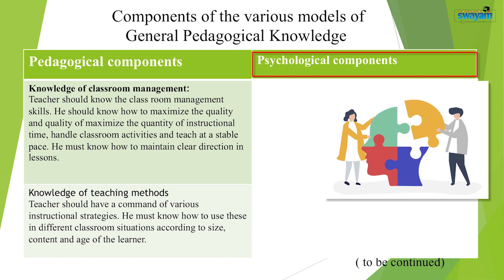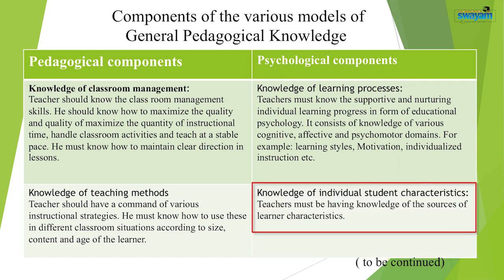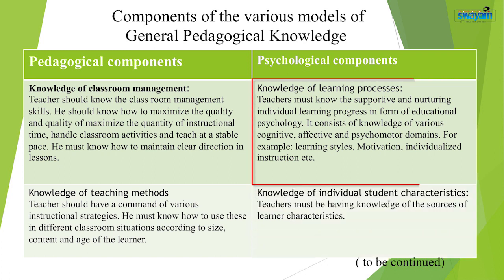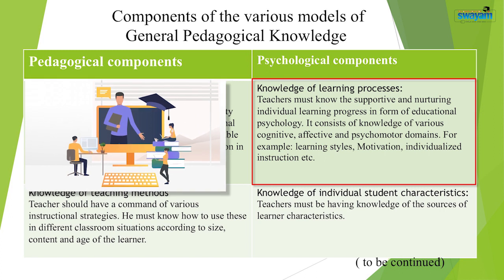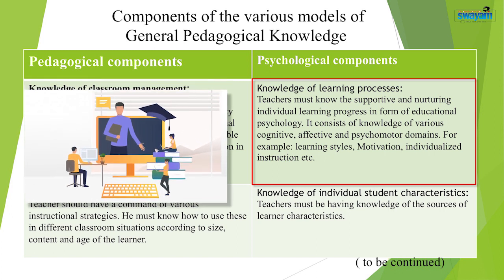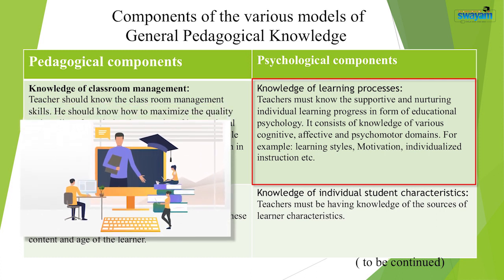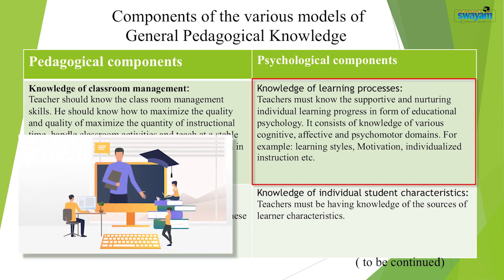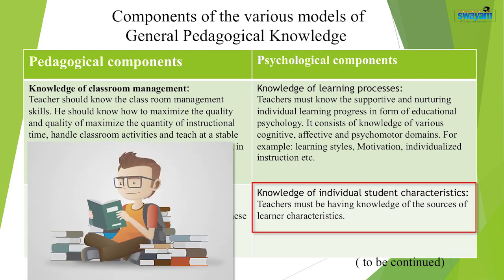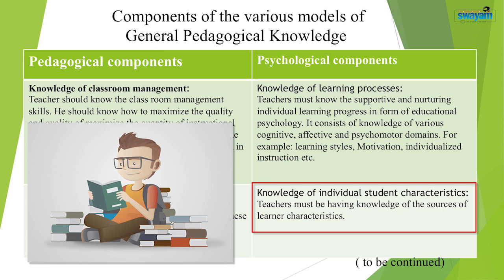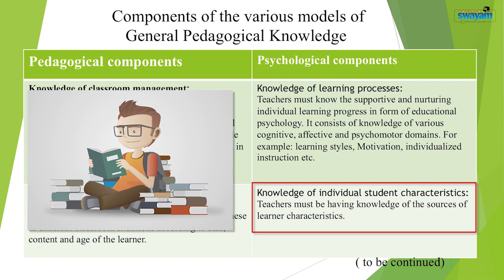The psychological components are knowledge of learning processes and knowledge of individual student characteristics. Knowledge of learning processes means supporting and fostering individual learning progress by having knowledge of various cognitive and motivational learning processes — for example, learning strategies, impact of prior knowledge, effects and quality characteristics of praise, rewards, etc. Knowledge of individual student characteristics involves having knowledge of the sources of student cognitive and emotional heterogeneity.